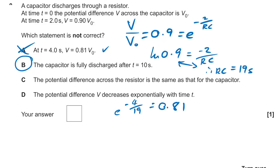Checking the remaining options: C — the PD across the resistor equals that of the capacitor because they are effectively in parallel, satisfying Kirchhoff's law. D — the PD decreases exponentially with time T. Both are true, so B is our wrong answer.